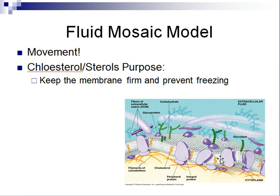The cholesterol's main purpose is to make sure that the cell membrane remains somewhat firm. If it is too loose or too fluid, the membrane could fall apart. So the cholesterol keeps the membrane firm and prevents it from freezing. However, if you end up with too much cholesterol in your cell membrane, the cell membrane would be too firm and it would prevent that movement. Alright guys, I'm going to end this first video right now. The next video is going to go through and detail the different types of proteins found in the cell membrane with all of their purposes.